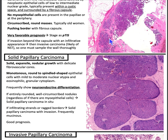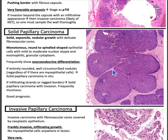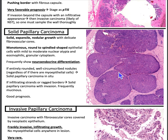Compared to the delicate fibrovascular stalks of encapsulated papillary carcinoma, solid papillary carcinoma is more cellular with small delicate fibrovascular cores. The cells are monotonous, round to spindle-shaped, with mild to moderate nuclear atypia and eosinophilic granular cytoplasm. It often shows neuroendocrine differentiation, confirmed with synaptophysin and chromogranin staining, and can show mucinous features as well. If entirely rounded, well-circumscribed nodules are present — regardless of myoepithelial cells at the periphery — it's solid papillary carcinoma in situ. If there are infiltrating strands or ragged borders, it's solid papillary carcinoma with invasion, and this variant frequently shows mucinous features.